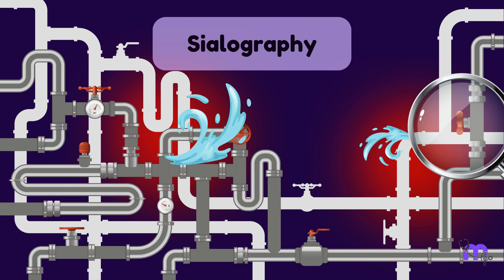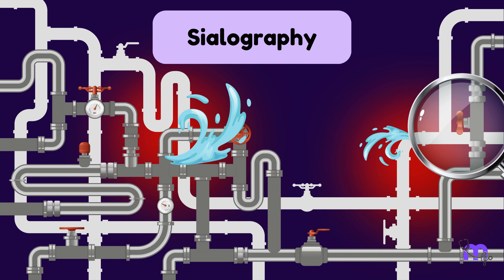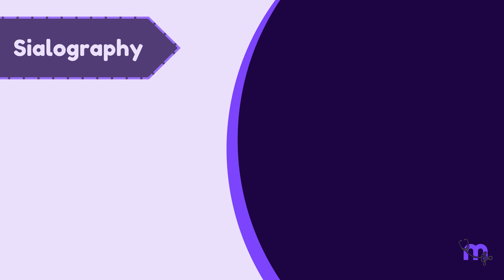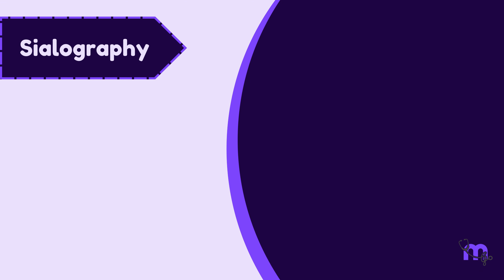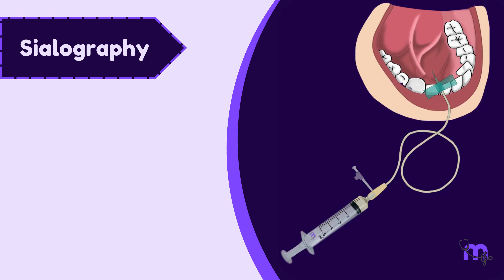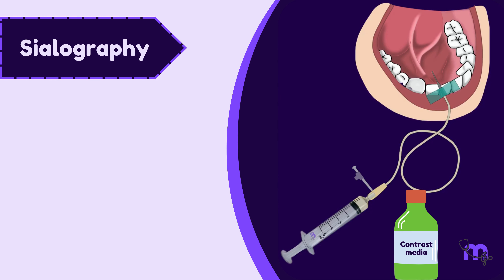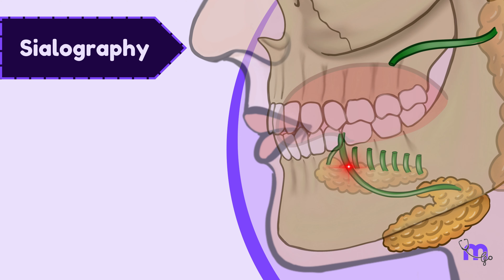Our salivary gland system acts like a hidden network of pipes, constantly working behind the scenes to keep our mouths moist. But what happens if there's a clog or leak in these vital pipelines? That's where sialography comes in.